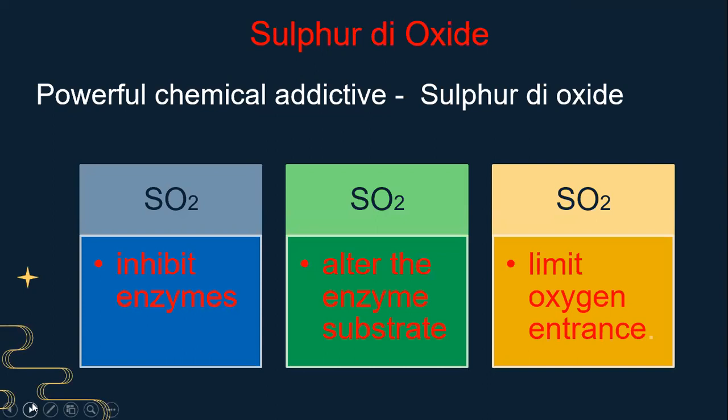Use of sulfur dioxide — it is a powerful chemical additive. Sulfur dioxide inhibits the enzymes, alters the enzyme substrate, and limits the oxygen entrance, thereby preventing enzymatic browning.